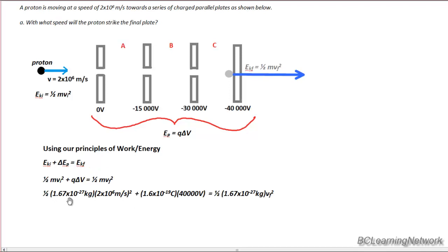So it's just a matter of substituting in the correct numbers. I use my formula sheet to find the mass of a proton, 1.67 times 10 to the negative 27 kilograms. The speed, the initial speed of the proton is given.